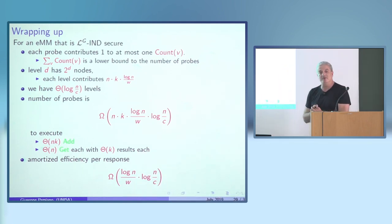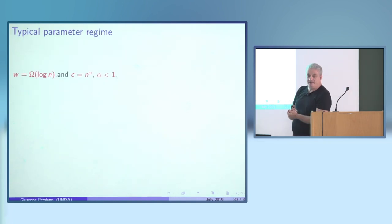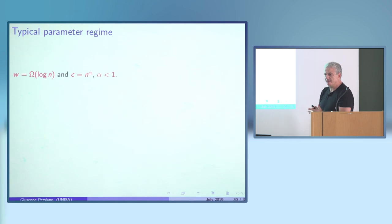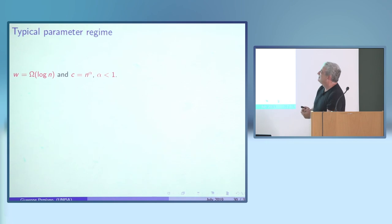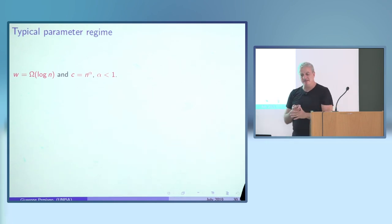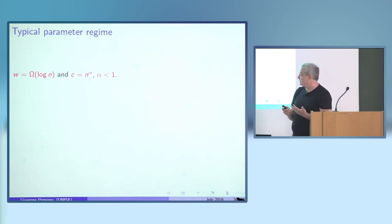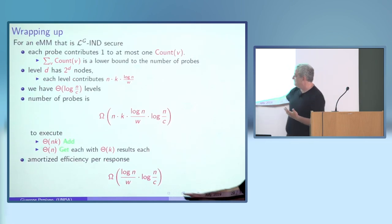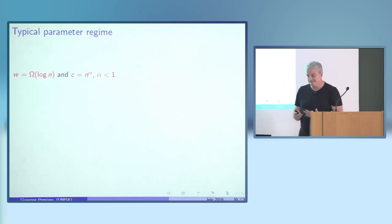In the typical parameter regime where w is at least log n and c is n^alpha for some alpha less than one, the terms simplify and you get log n overhead.